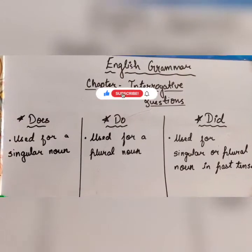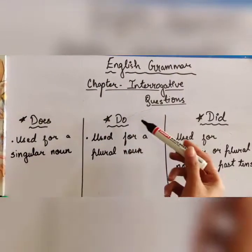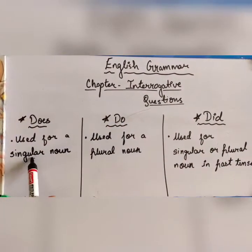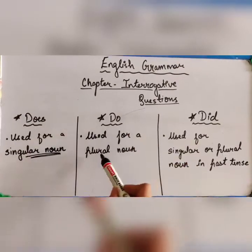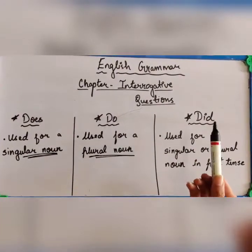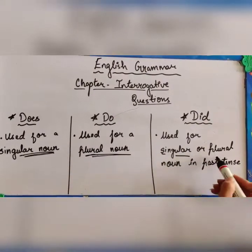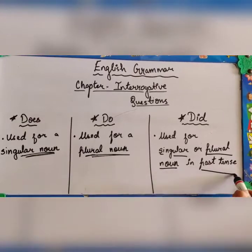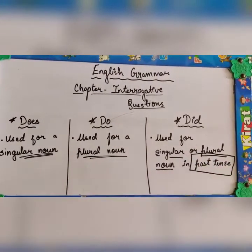Let us understand: 'does', 'do', and 'did'. 'Does' is used for a singular noun. 'Do' is used for a plural noun. And 'did' is used for singular as well as plural noun, but most importantly it is used for past tense.